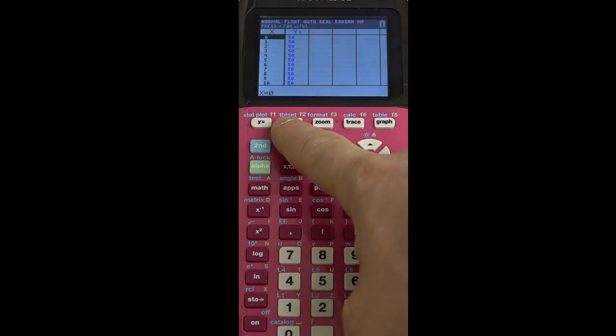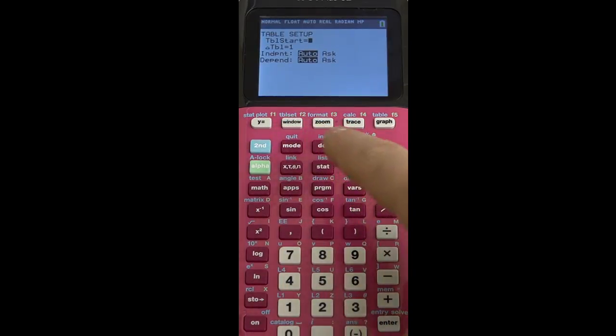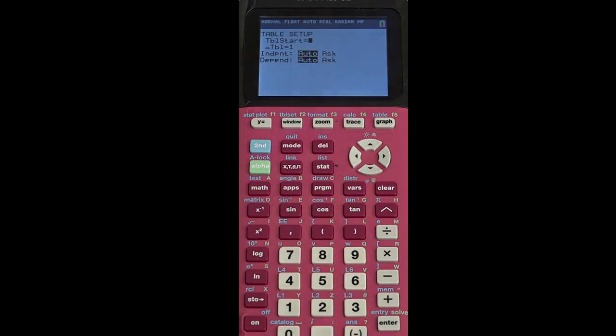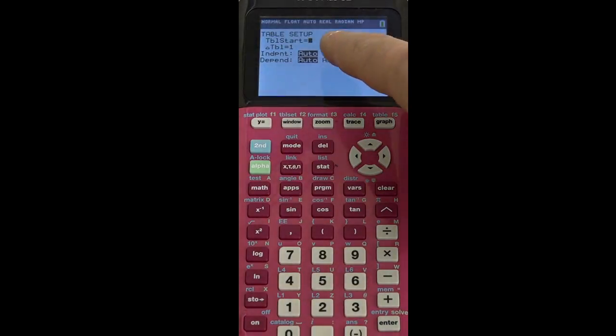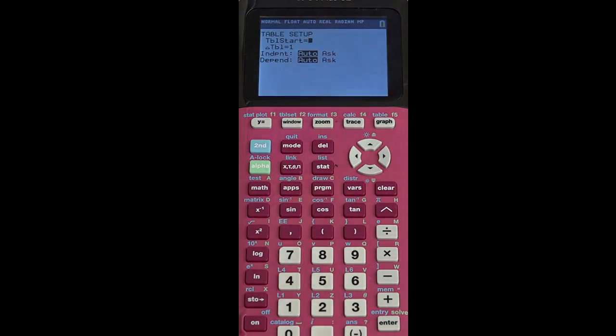Right there, above window, second window, is this word table set. And in table set, we've got a couple of different features that pertain very much to what we're learning here in section 1.1. There's where do you want the table to start? In this case, zero. How much do you want the table to go up by every time? And in this case, that's just going up by one each time.